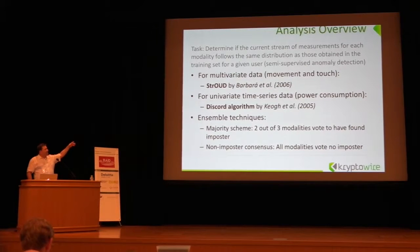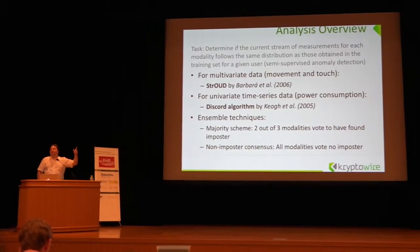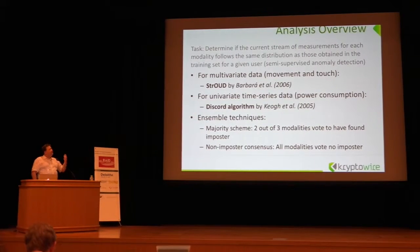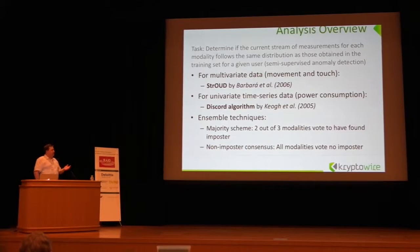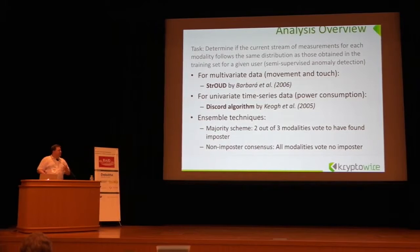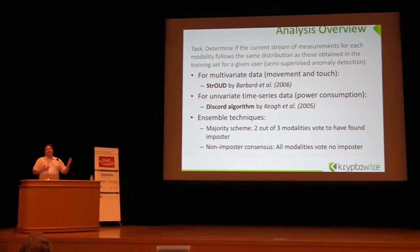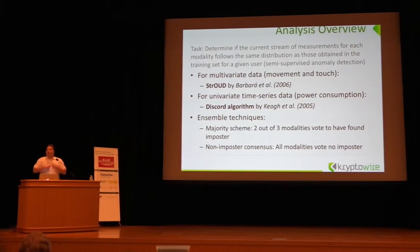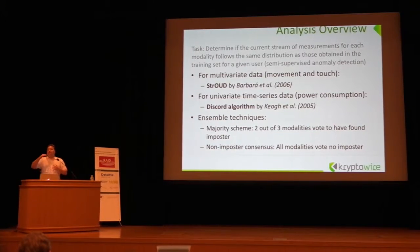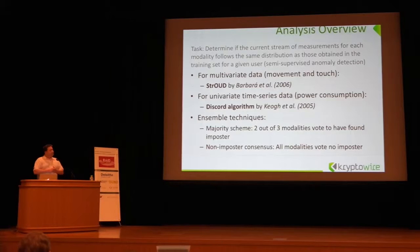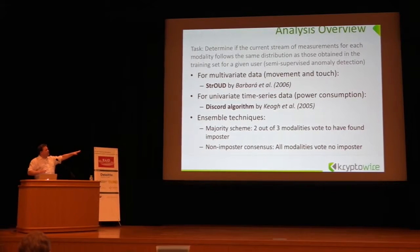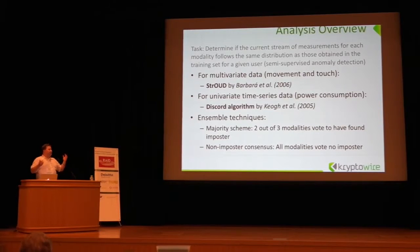We use different algorithms — one of them is Straub. Different types of data require different processing. Discord algorithms are better for power. We use what is called two-out-of-three majority: if two out of three modalities vote that you are outside of the model, we have found an imposter and reduce your score. The no-imposter consensus means that all modalities vote for no imposter — if everybody votes that you are not an imposter, then we think this is okay.